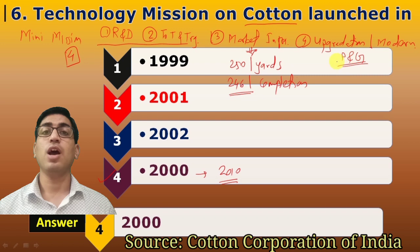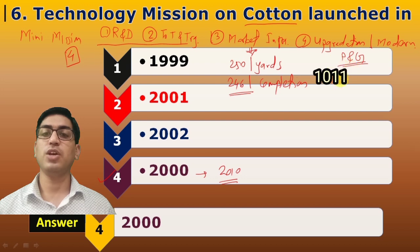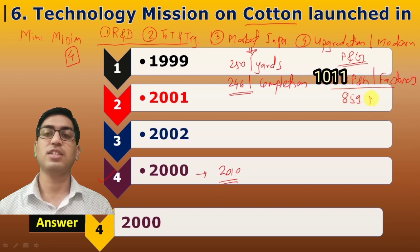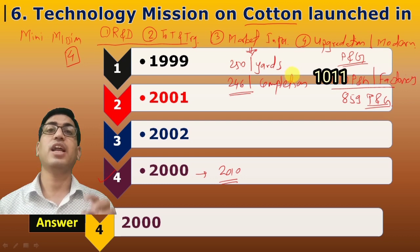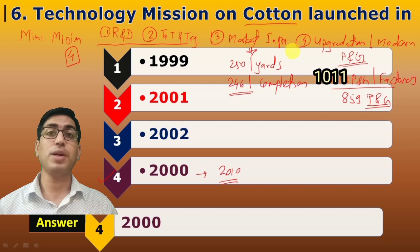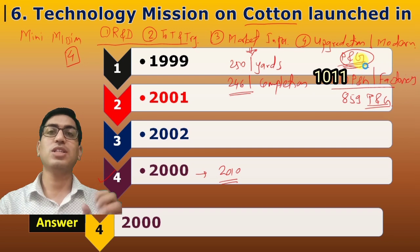Mini Mission 4 was concerned with upgradation and modernization — specifically the modernization of pressing and ginning factories. Out of 1,110 pressing and ginning factories, completion of 859 factories was achieved under Mini Mission 4. So in summary, the four cotton mini missions are: (1) R&D, (2) training and transfer of technology, (3) market infrastructure like market yards, and (4) upgradation and modernization of pressing and ginning factories.